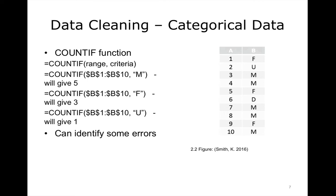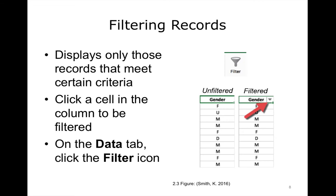So let's look at another Excel tool called Filter. Excel's Filter function lets you display only records that meet certain criteria. To filter records, click a cell in the column to be filtered — in this case, we are using the gender column — and then click the filter icon on the Data tab. Nothing will appear to happen, other than a drop-down arrow will now appear at the right-hand side of the column heading, indicated here with a red arrow.